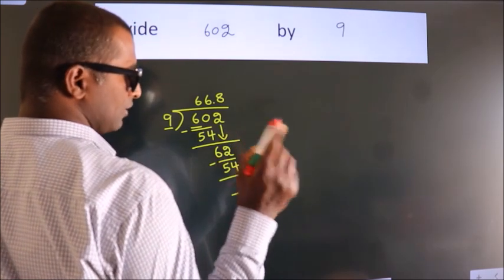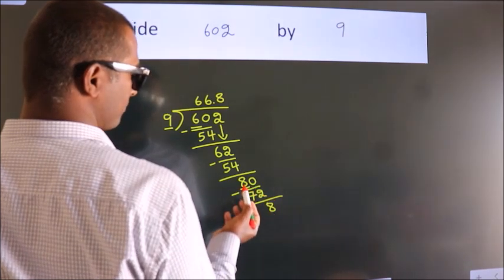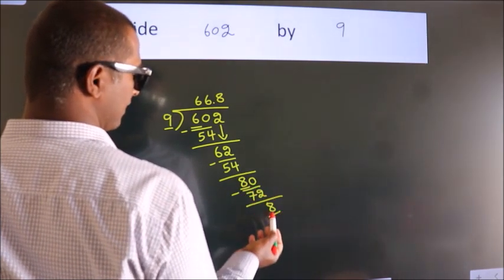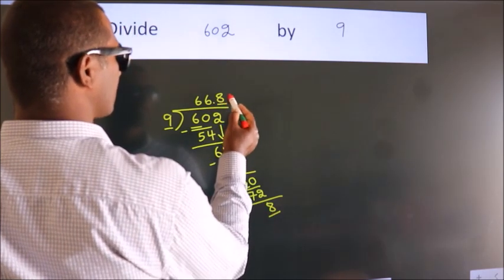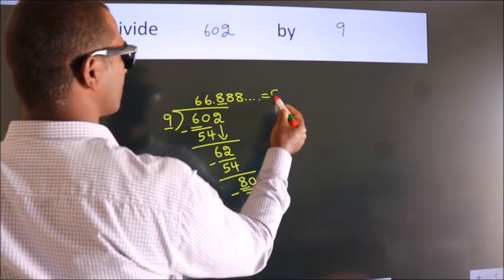Now, you observe. We had 8 here, and we got 8 again. That means this number keeps on repeating. So this is our quotient.